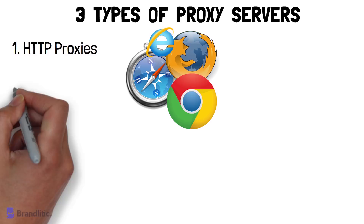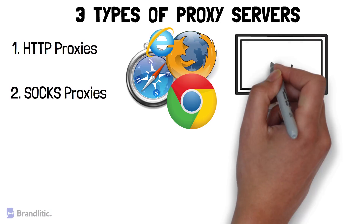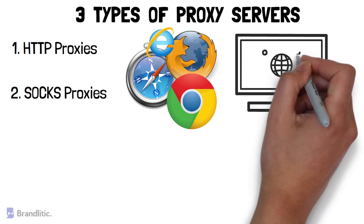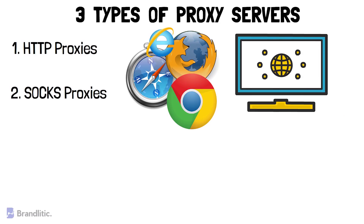Number 2: SOCKS proxies. These proxies are not limited to web traffic, but still work on the application level. For example, you can set it up on a game, video streaming app, or a P2P platform. Although they can handle all kinds of traffic, they are usually slower than HTTP proxies because they are more popular and often have a higher load on them.